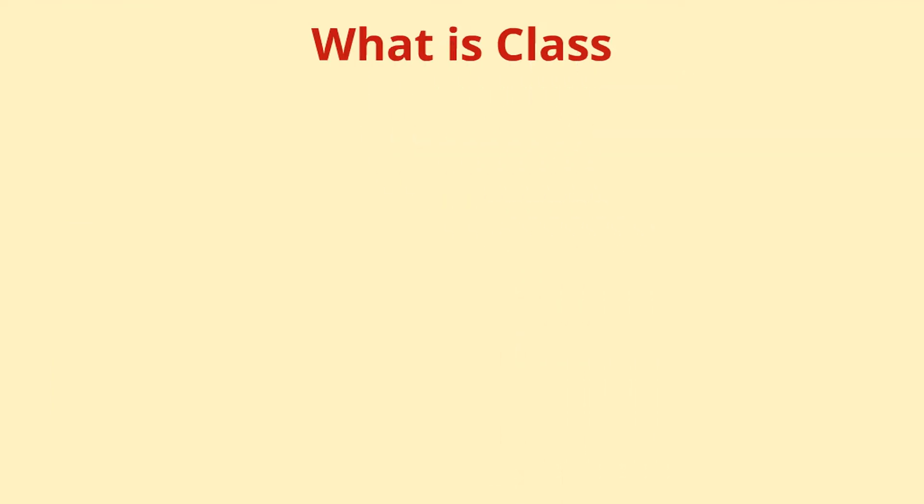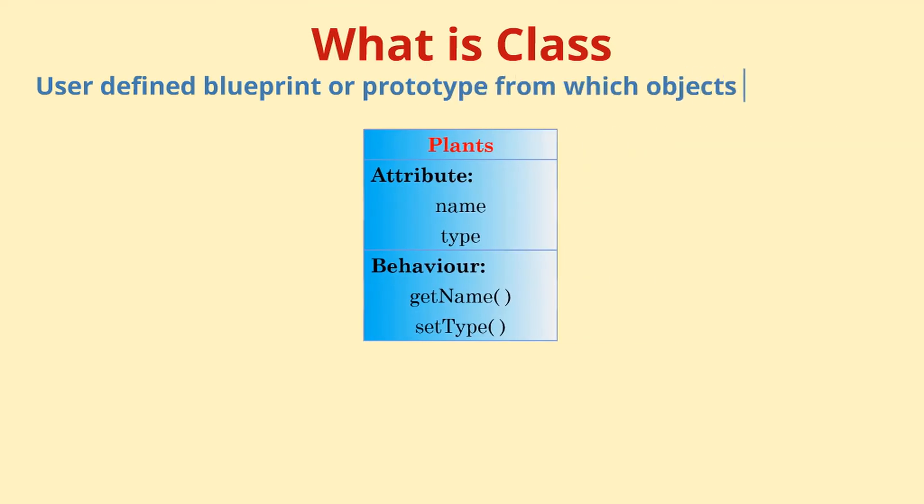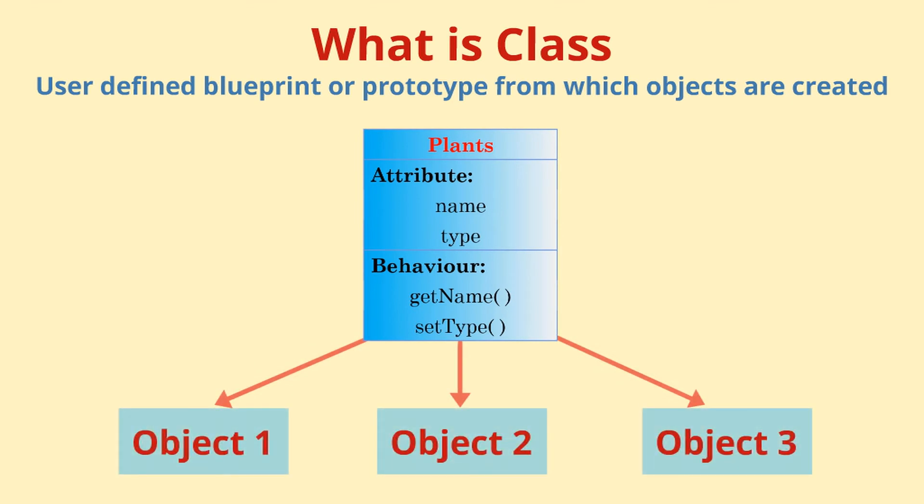Before we learn what an object is, let us understand what is a class. A class is a user-defined blueprint or prototype from which objects are created. It represents the set of properties or methods that are common to all objects of one type.